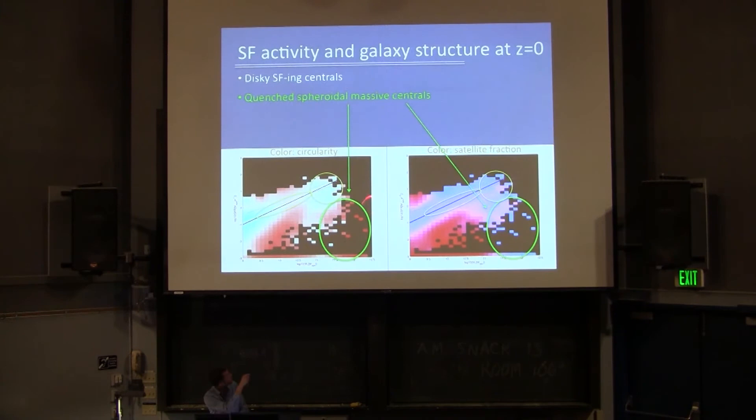So we have several regions here. Along the main sequence, we have these disky, blue here, central galaxies. Here we have the massive quenched, you see the low star formation rate, spheroidal galaxies. And then we have the spheroidal, or the non-circular quenched galaxies, which are not as massive, and these tend to be satellites. There is something that makes the galaxies spheroidal once they become satellite. And then above the main sequence, we have also non-rotation supported galaxies, which are still centrals.